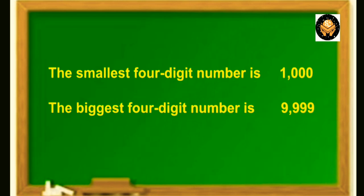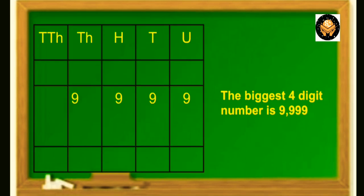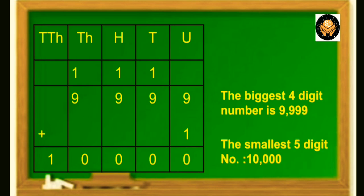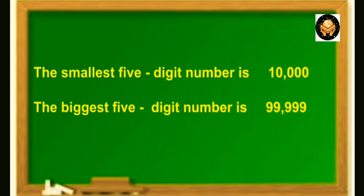The smallest 4 digit number is 1000 and the biggest 4 digit number is 9999. Similarly, if we add 1 to the greatest 4 digit number, we will get the next number, that is 10,000, the smallest 5 digit number. Thus the smallest 5 digit number is 10,000 and the biggest 5 digit number is 99,999.